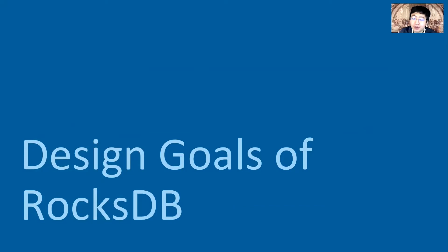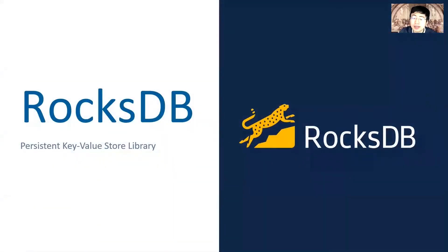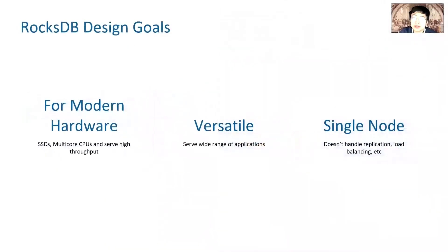First, what did we build RocksDB for? RocksDB is a persistent key-value store library. It stores data in persistent storage, and users interact with data through C++ functions. We designed RocksDB for modern hardware — SSDs and multi-core CPUs — to serve high read and write throughput. We also hoped it could be tuned to serve a wide range of applications.